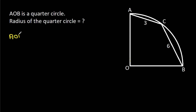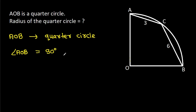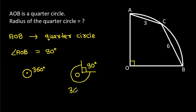We know that AOB is a quarter circle, which means angle AOB is 90 degrees. Since the angle around any point is 360 degrees, the reflex angle at O will be 360 minus 90, which is 270 degrees.